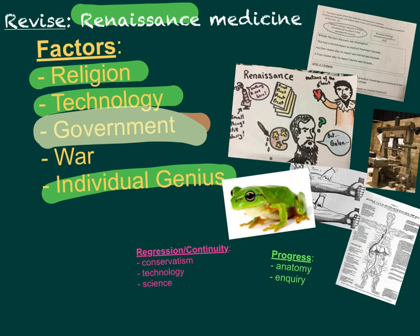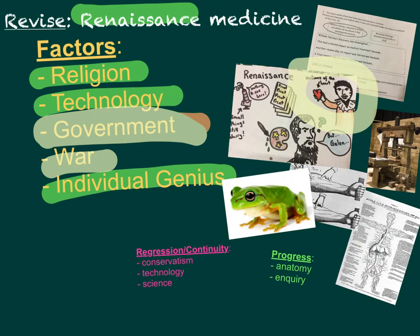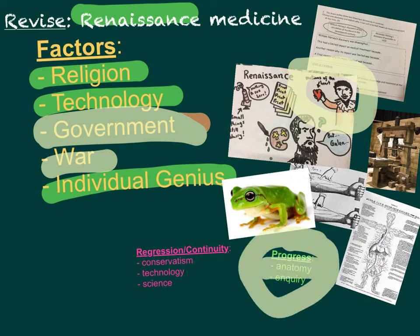Wars going on in the Renaissance period also led to some discoveries. Harvey himself was a battlefield surgeon and noticed the spurting of blood. Paré was another battlefield surgeon known for developing ligatures — silk threads tied around blood vessels or arteries to stop or stem bleeding. So war also caused some progress in medicine at this time. Key progress was made mainly in knowledge of anatomy and developing the spirit of inquiry, moving away from simply accepting Galen and Hippocrates' ideas.